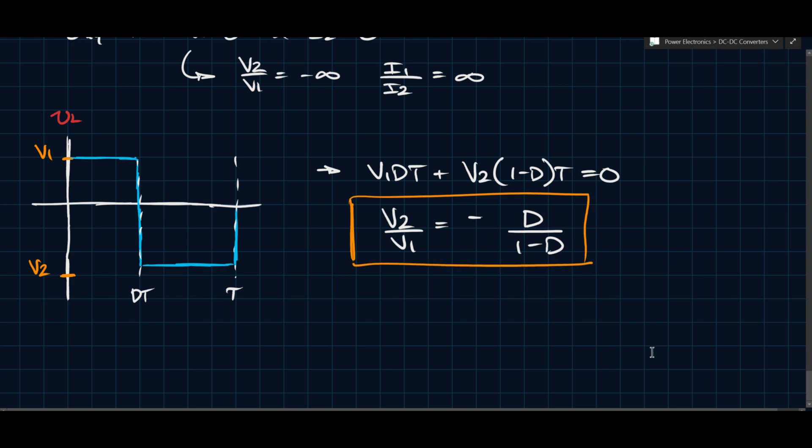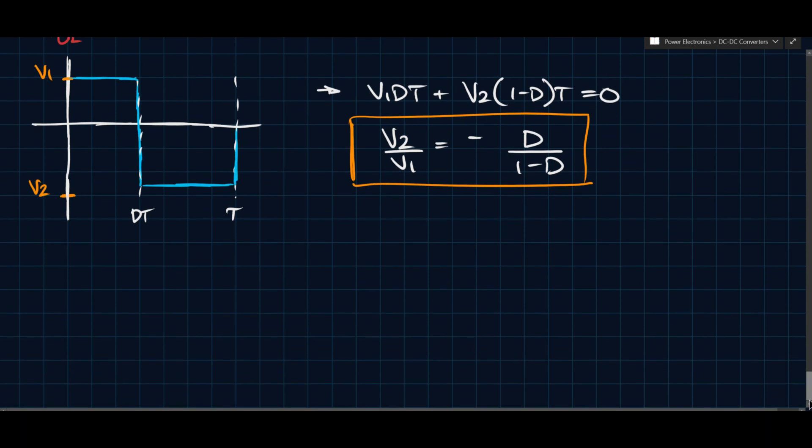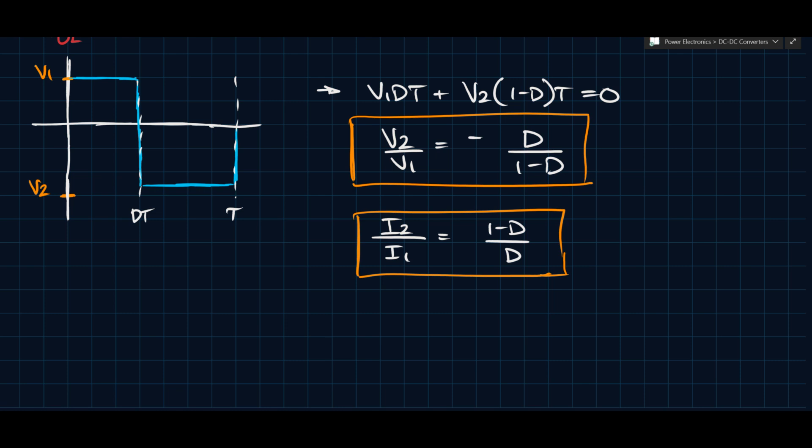And so this is a fairly interesting result, and we'll discuss why in a second. But before that, we can look at the current conversion ratio, and the current conversion ratio of this is just going to be the negative inverse, right? So I2 over I1 is 1 minus D divided by D. And again, this is from the power balance or the conservation of energy principle.